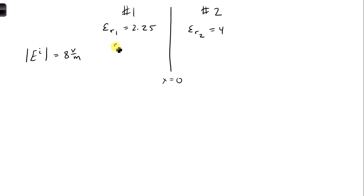Both materials are lossless, meaning that sigma 1 is 0, sigma 2 is also 0, and non-magnetic, meaning mu is just equal to mu 0 in mu 1, and also mu 2 is equal to mu 0.